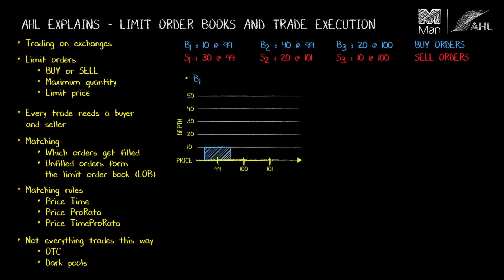Let's assume B1 arrives — there's nothing to fill against, so it enters the limit order book. Then B2 arrives; again nothing to fill against, so it's added to the limit order book. Now S1 arrives and we have a match. B1 has priority as it arrived first — this is the time aspect of price-time matching. So B1 gets completely filled, leaving 20 shares to part fill against B2.